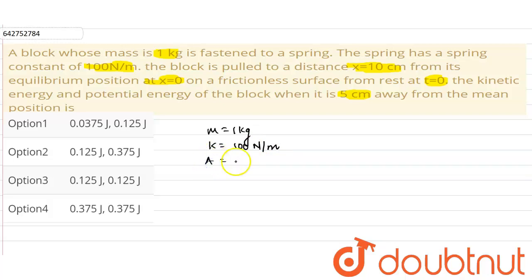So the amplitude is given to us as 10 centimeter, and we have to find the kinetic energy and potential energy when the block is 5 centimeter away from the mean position. So the displacement of the block is 5 centimeter given to us.